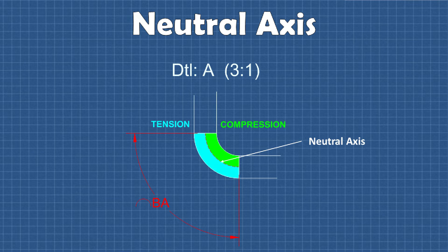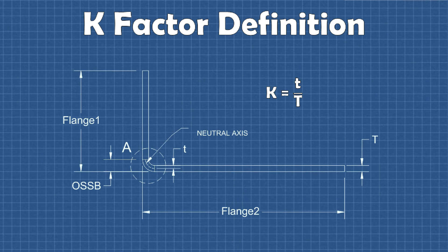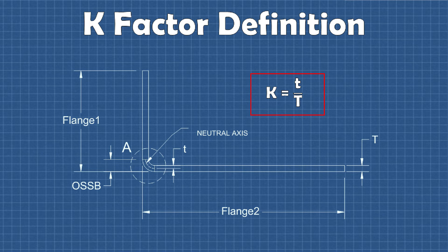With the bend allowance we can calculate the flat length required to create an accurate formed part. So the location of the neutral axis is actually exactly what the k-factor tells us. It's expressed as k equals lowercase t over uppercase T, where lowercase t is the distance from the inside of the material to the neutral axis and uppercase T is the thickness of the material. The k-factor is expressed as a ratio like this so we have a standardized way of describing the location of the neutral axis regardless of material thickness.